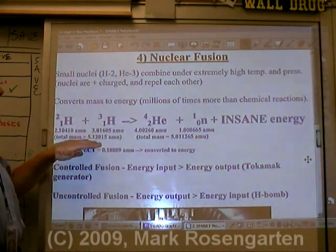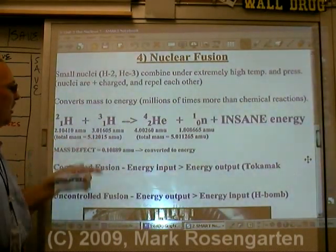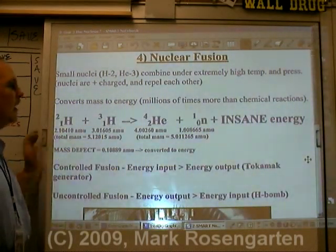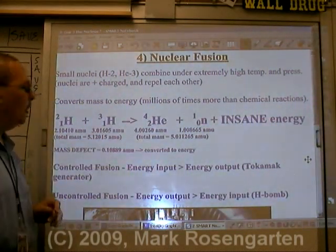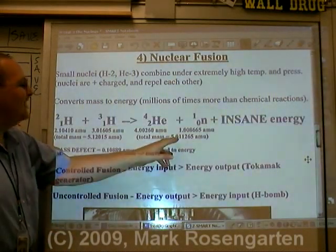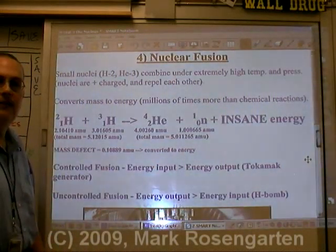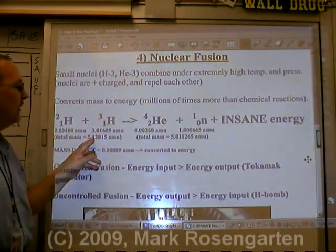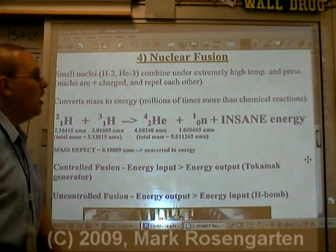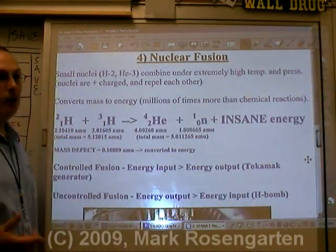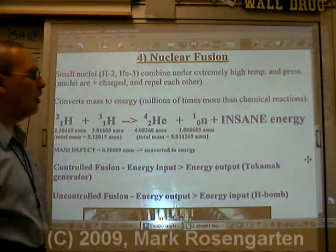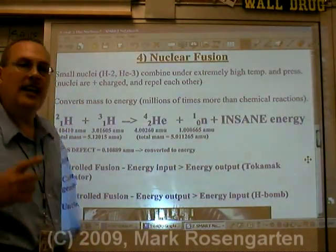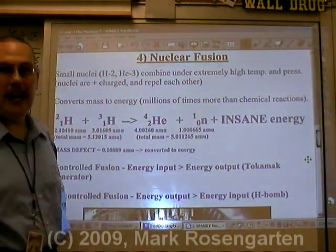The total mass of the hydrogens that are colliding is 5.12015 amus. The helium and the neutron that are formed have a total mass of 5.011265 amus — not enough to show up in the ones place, but enough to show up in the tenths place. And that tenth of an AMU, if you've got enough of these nuclei, multiply that by the speed of light squared, and you get thousands of times more energy than you get out of fission.